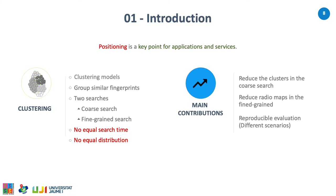This paper introduces three new, more computationally efficient variants of k-means clustering based on knowledge about signal propagation. The main contributions are: a new computationally efficient way to reduce the clusters in the coarse search, two new computationally efficient ways to further reduce the reduced radio maps in the fine-grain search, and finally a reproducible evaluation to compare different scenarios.